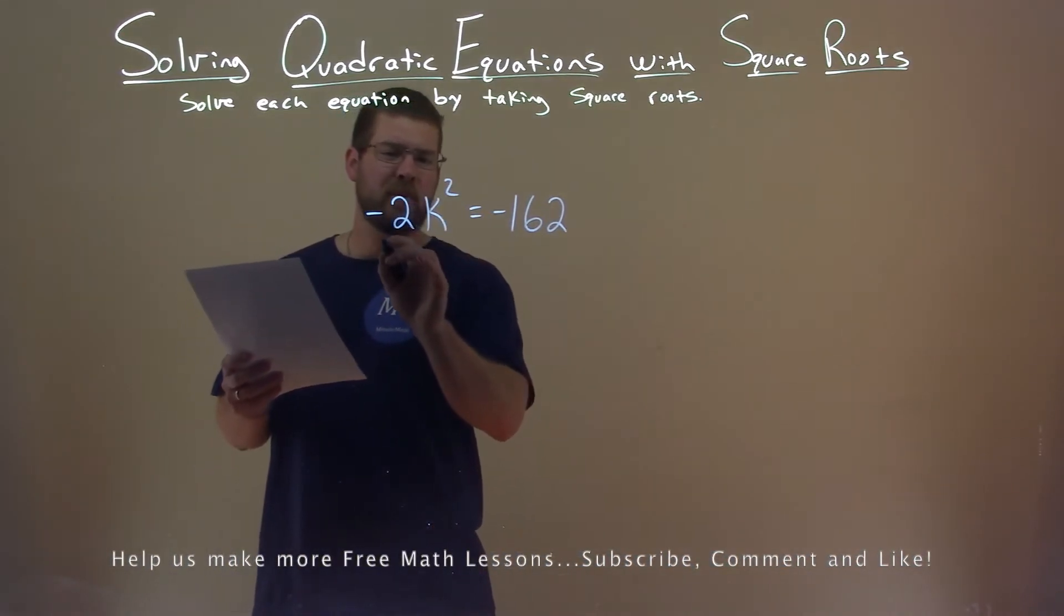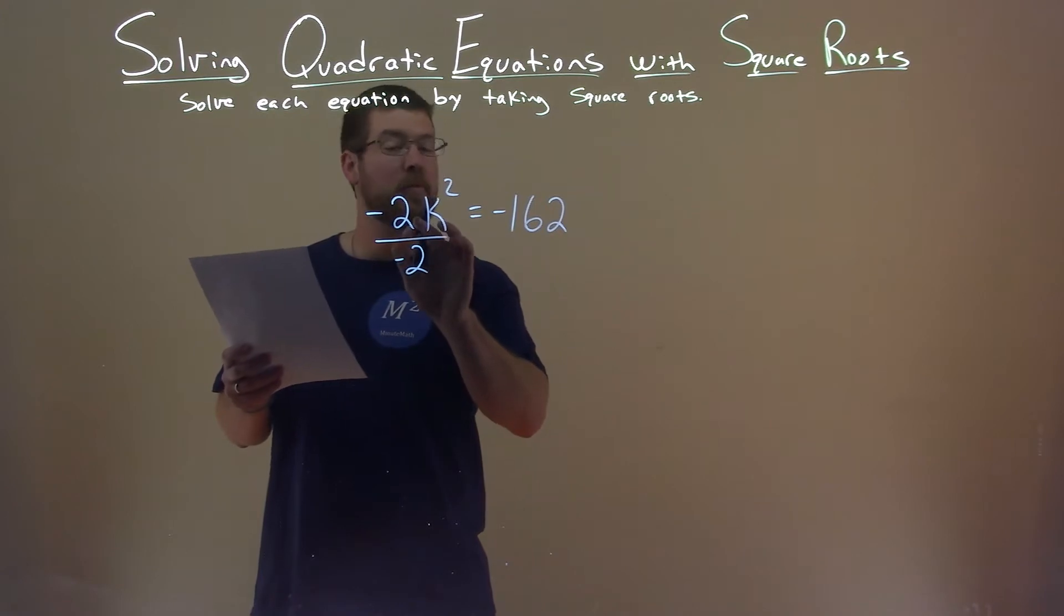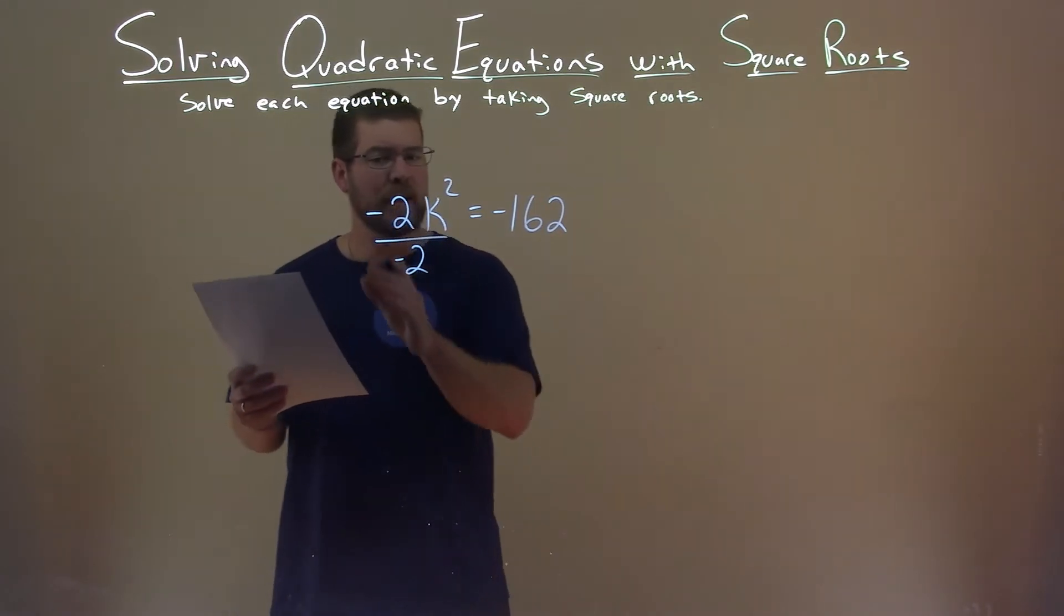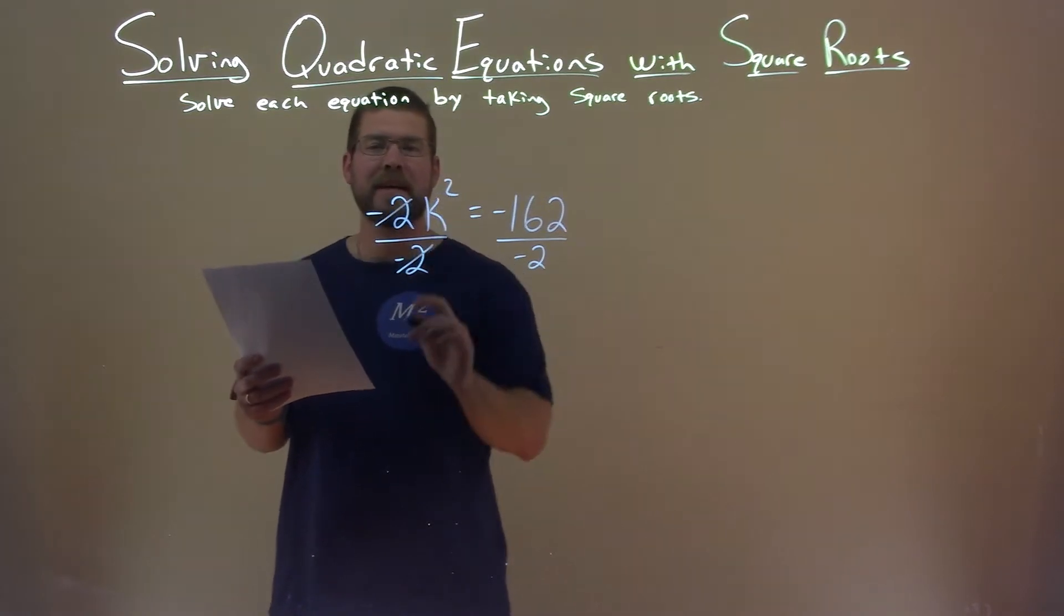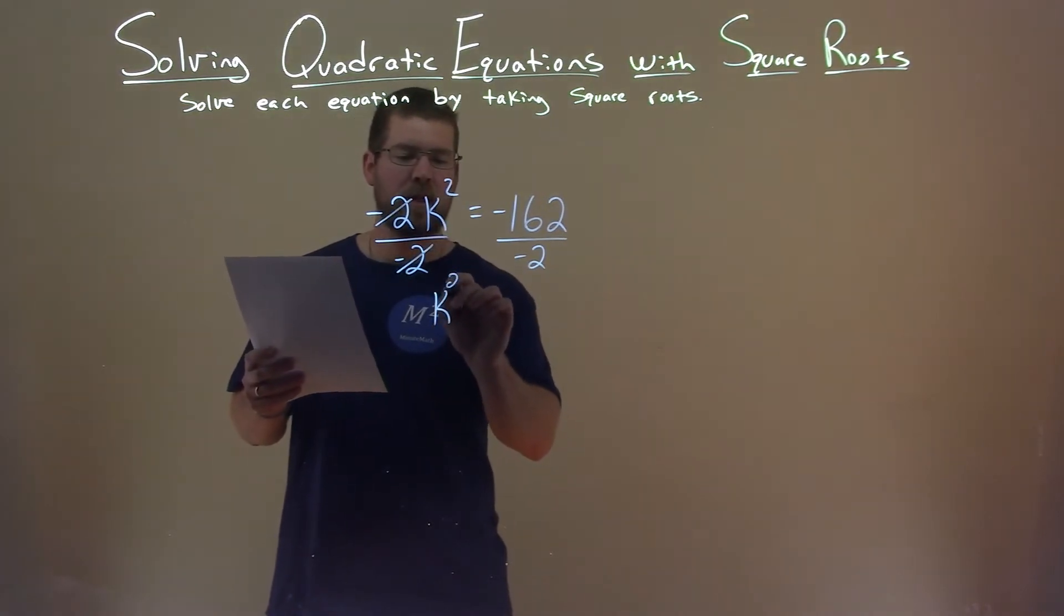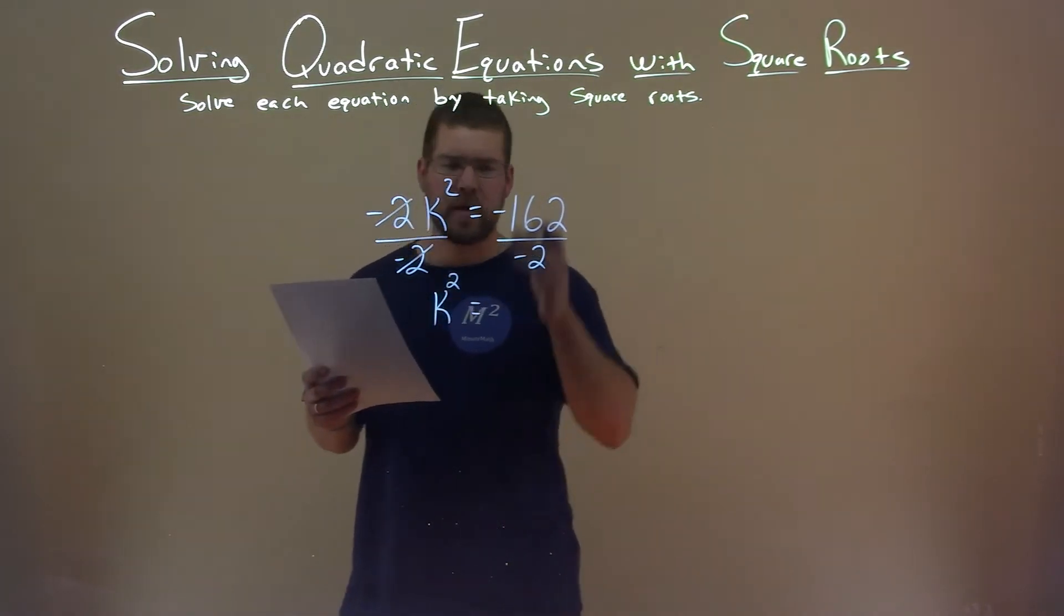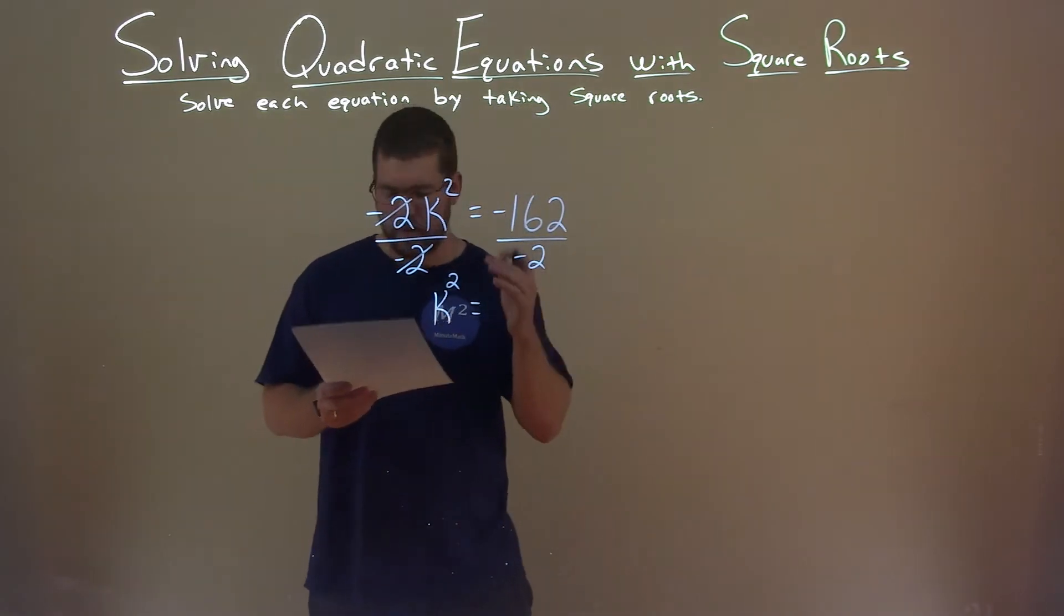First, I need to divide both sides by negative 2. k squared is being multiplied by negative 2, and by dividing both sides by negative 2, I'll eliminate that, giving me k squared by itself on the left. On the right, we have negative 162 divided by negative 2.